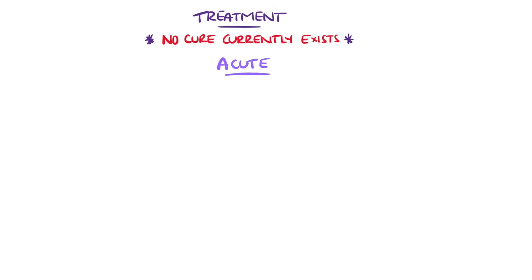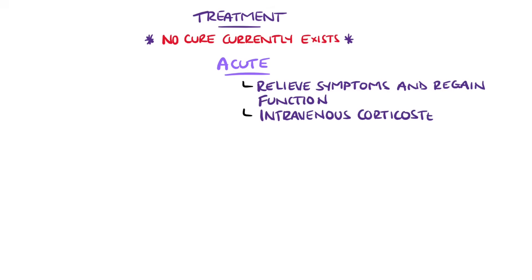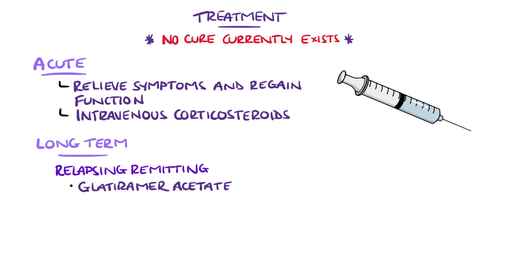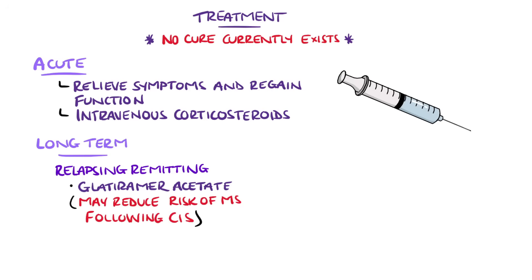During acute attacks, the aim is to relieve symptoms and regain function, mostly achieved using intravenous corticosteroids. Once improved, the aim is to reduce the rate of further attacks and thereby reduce disability, achieved with disease-modifying drugs. For relapsing MS, glatiramer acetate — a mixture of synthetic polypeptides that may act as a ligand to the major histocompatibility complex molecules — can reduce the risk of progression from a clinically isolated syndrome to MS. Interferon beta preparations are also first-line agents, modulating T and B cells and therefore the inflammatory response.